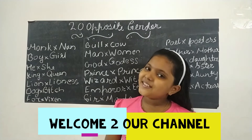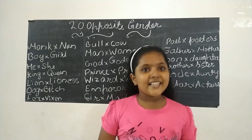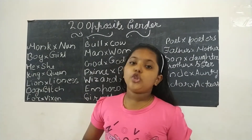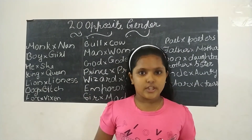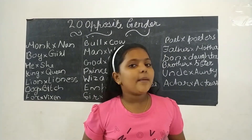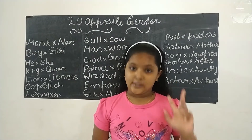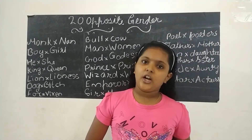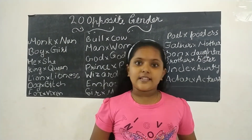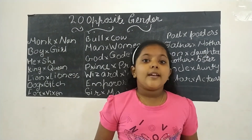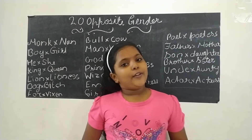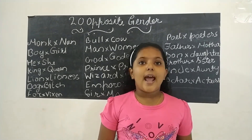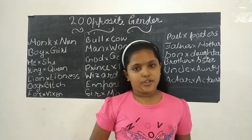Hello, welcome to the channel. In this video, I will share with you the opposite gender words. There are mainly three types of genders: masculine, feminine, and neutral gender. Neutral gender is referred to non-living things. In this video, I am going to show you masculine and feminine genders.